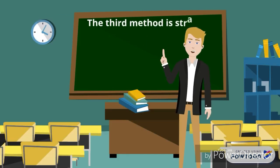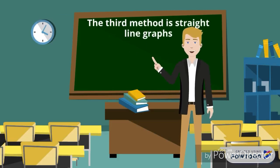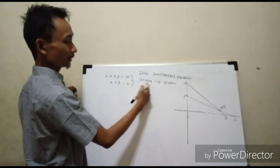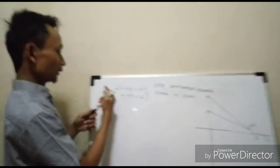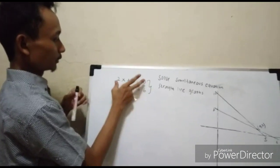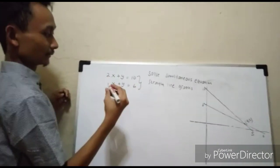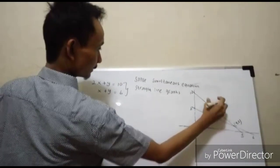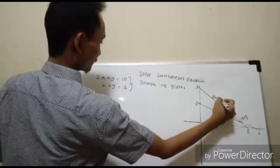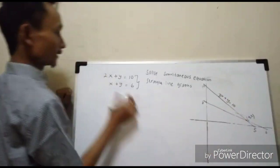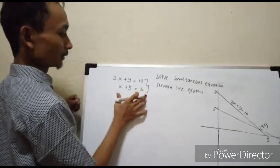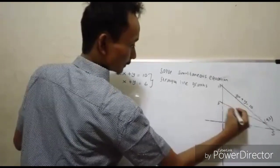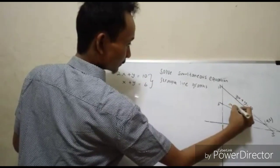The third method is straight line graphs. For 2x plus y equals 10 and x plus y equals 6, we graph both lines.